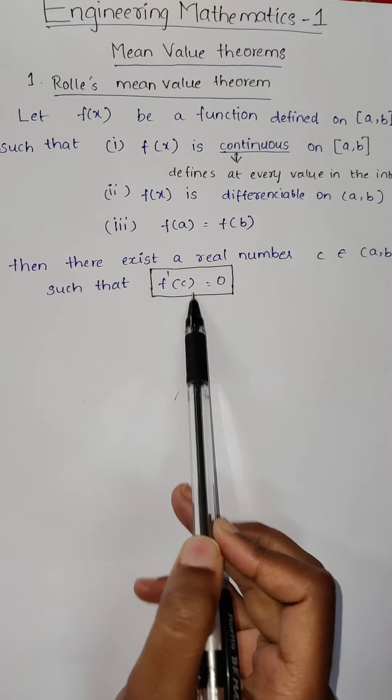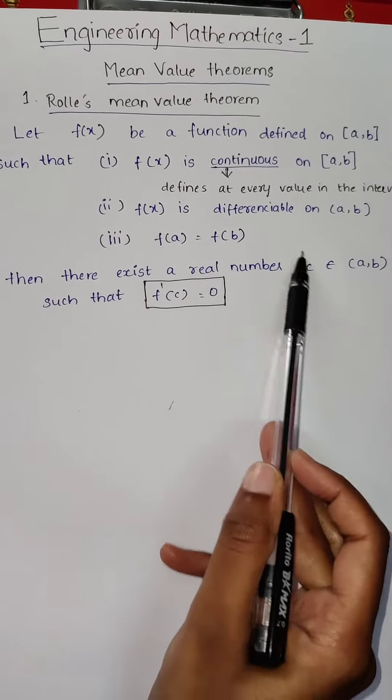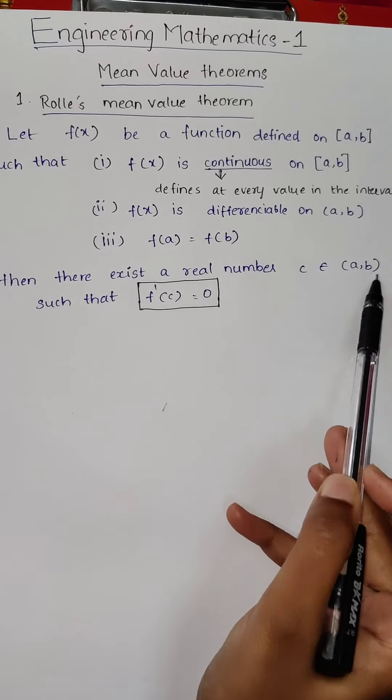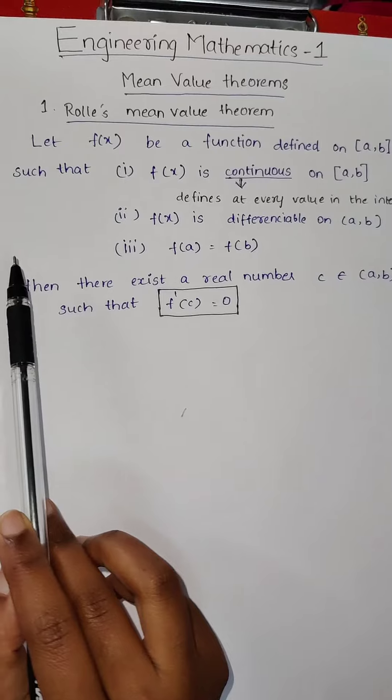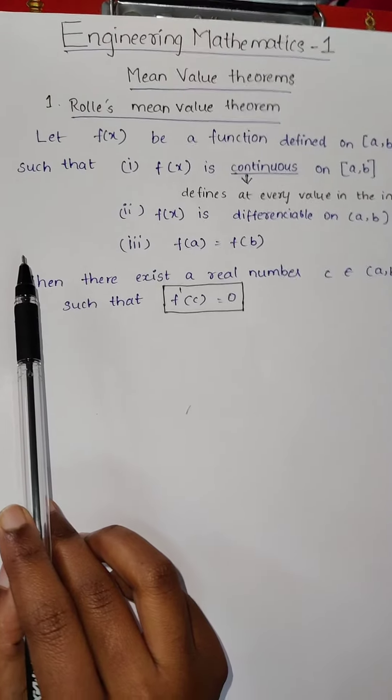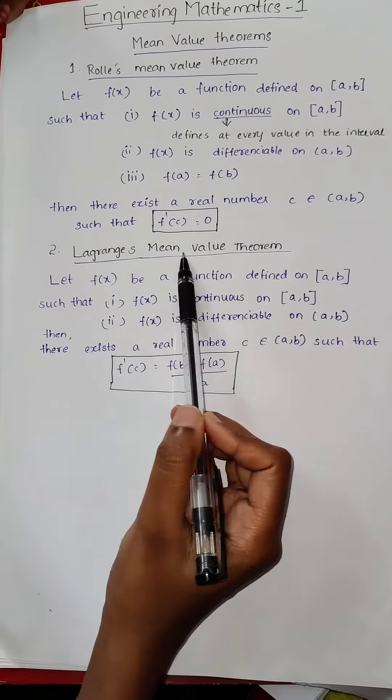From this relation, we can get the c value and that c will be belonging to open interval a comma b. This Rolle's mean value theorem is completed. Now, let us discuss Lagrange's mean value theorem.